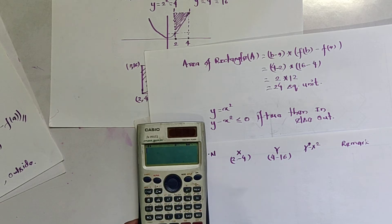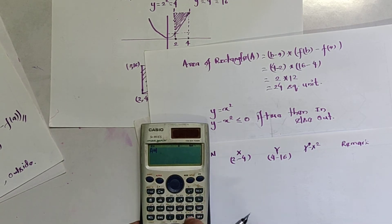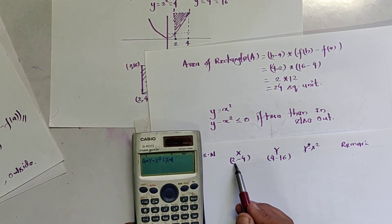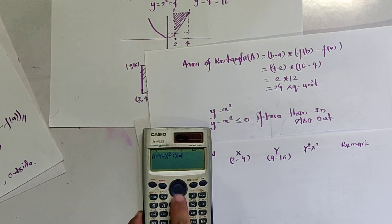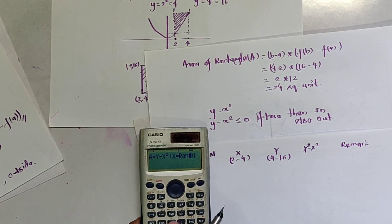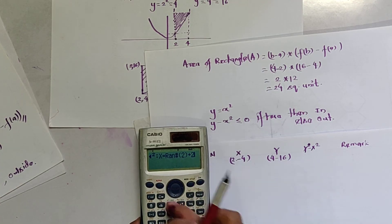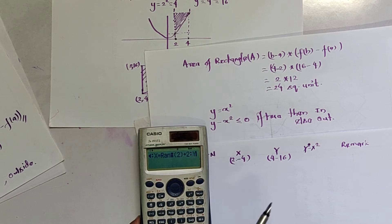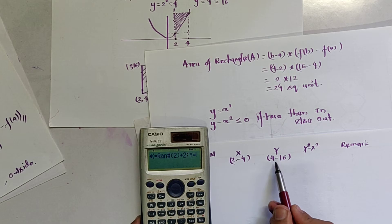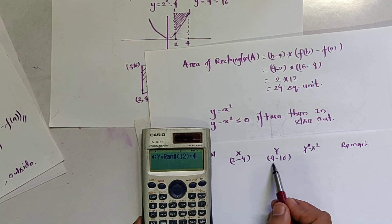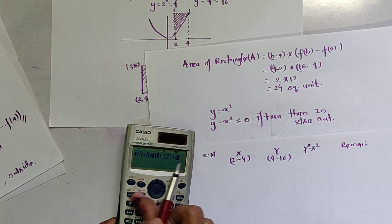Let us suppose A equals y minus x squared. The random number x between 2 and 4 is calculated as: x = 2 + rand × 2. Similarly, the random number y between 4 and 16 is calculated as: y = 4 + rand × 12. This is how we calculate random numbers in the respective ranges.